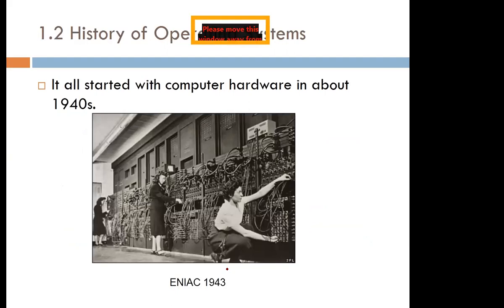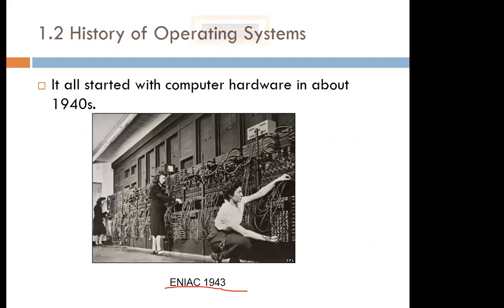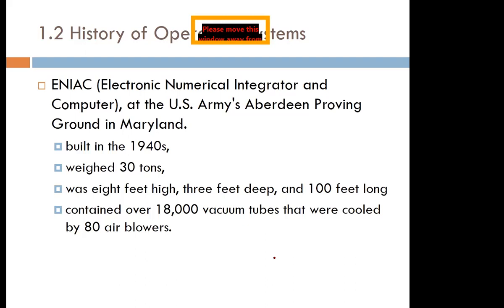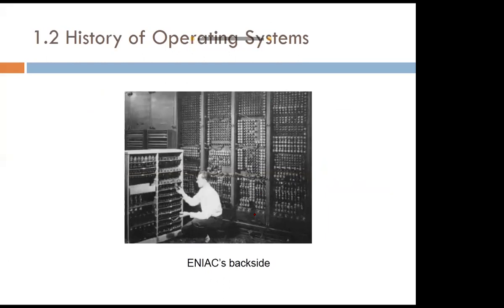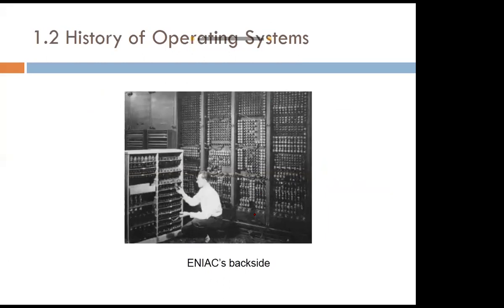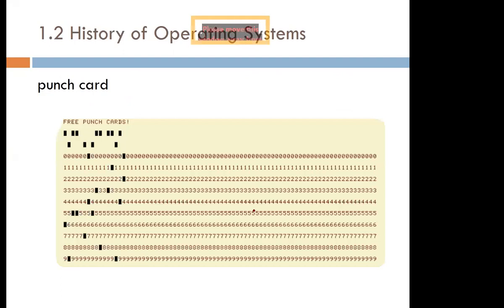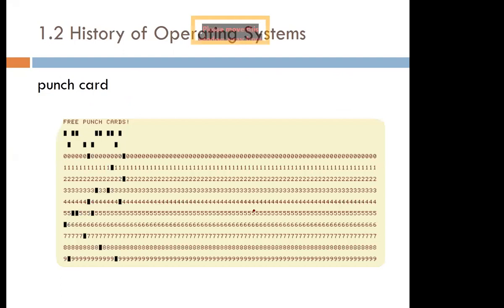Looking at the history of computers — we started with the ENIAC, where the hardware was hard-wired and the operating system was loaded using switches, punch cards, and the like. The ENIAC used vacuum tubes which were larger, causing it to be bigger and consume more power. Someone had to be physically present at the back to change the switches so that programs being loaded could run. Programs were loaded manually using switches, punch cards, or paper tapes.